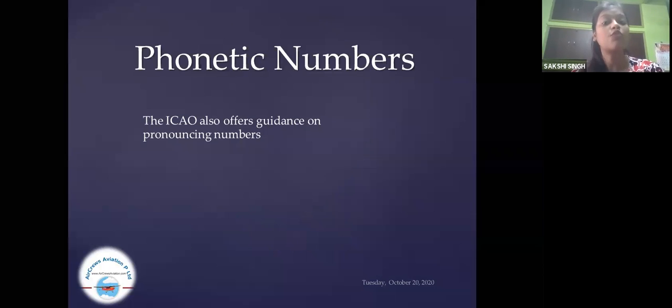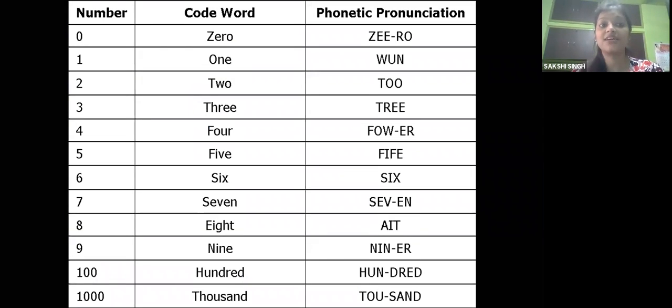The ICAO also offers guidance on pronouncing the numbers. You may find here a number with the code word and the phonetic pronunciation. The first one is zero. And after that, one. Next one is two. Next of two is three. And then four. And then five. And then six.